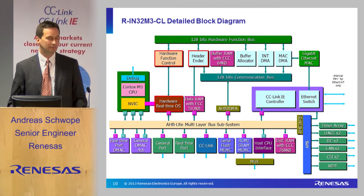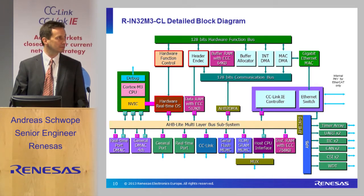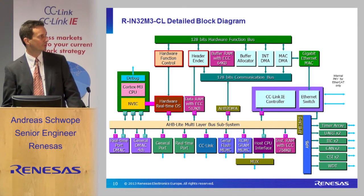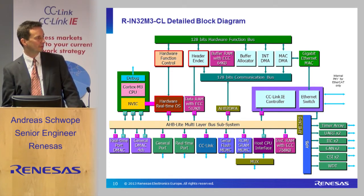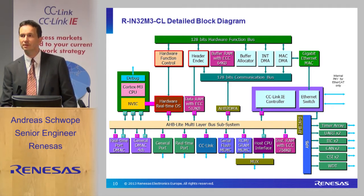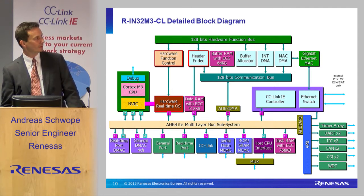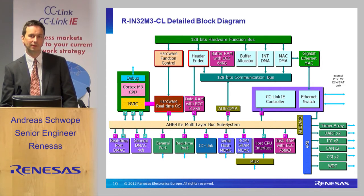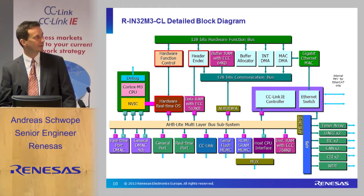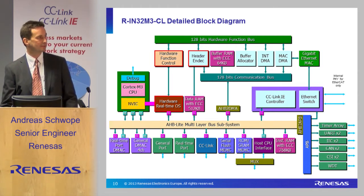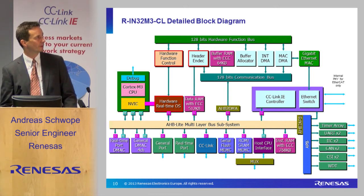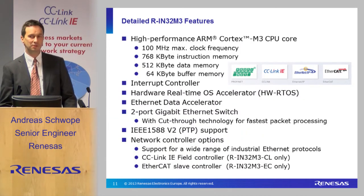Now we are coming to the internal structure. We have the CPU, some memory interfaces, and the CC-Link IE specific part which takes over all the CC-Link protocol parts. There are also very specific blocks: header, encoder, decoder, hardware real-time operating system — which already indicates that there are very specific IPs accelerating certain parts inside industrial automation.